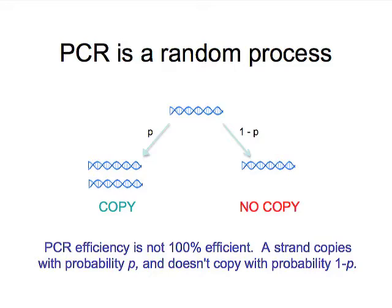The point is that PCR is not 100% efficient. It's not entirely, exactly reproducible. It's a random branching process. A strand will copy with probability P, and it won't copy with a probability 1 minus P. And this randomness is the heart of stochastic effects in STR data.